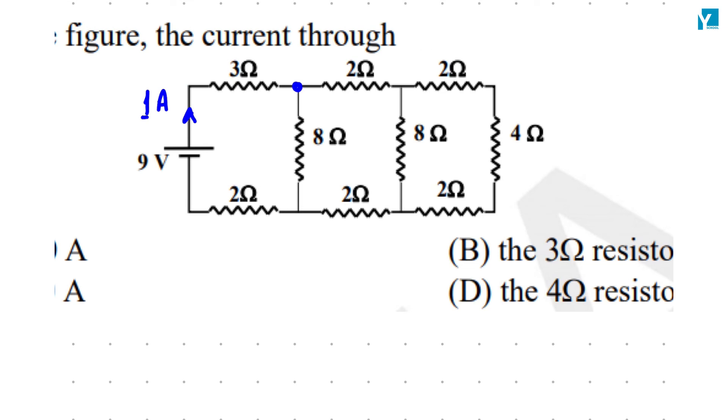This 1 ampere of current reaches this location. And as we just calculated, all of this combined gives us a value of 8 ohms. So this breaks into half and half. Half here, half upwards.